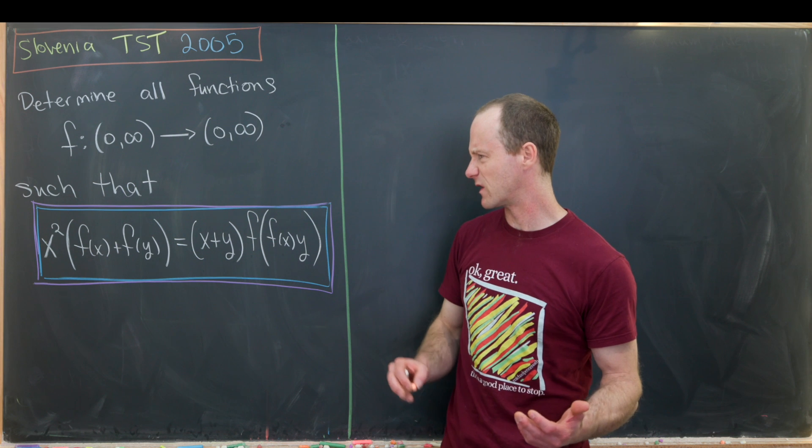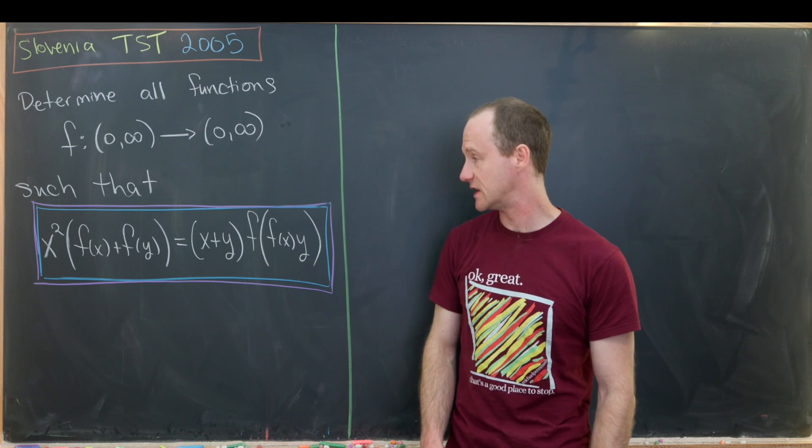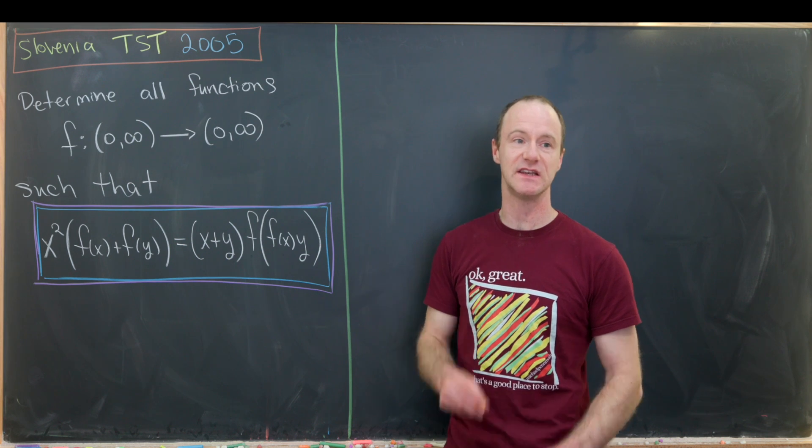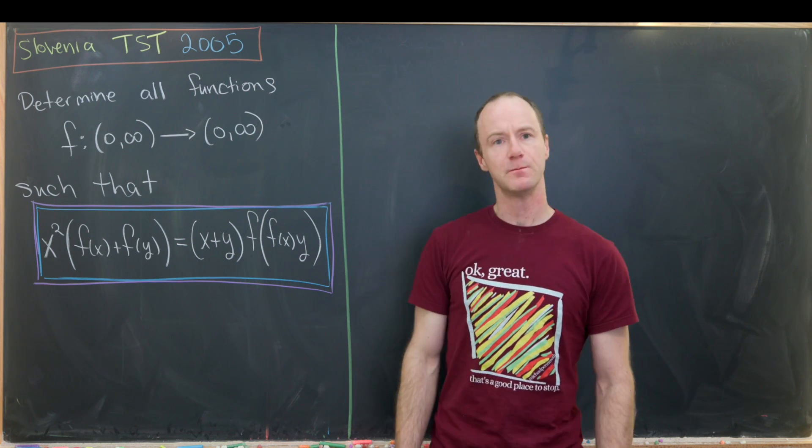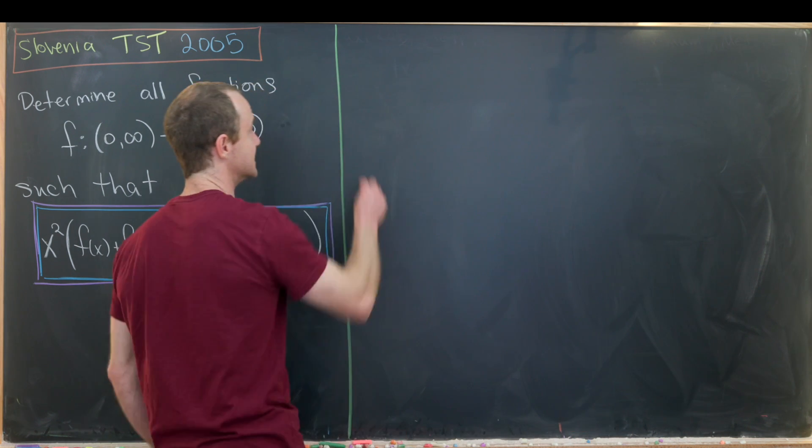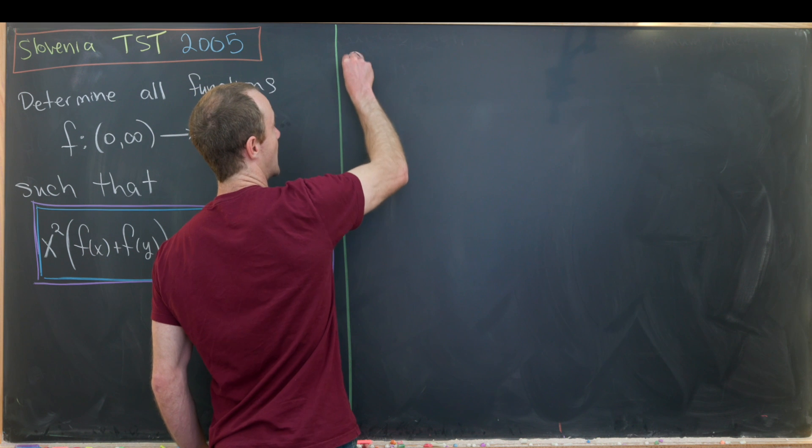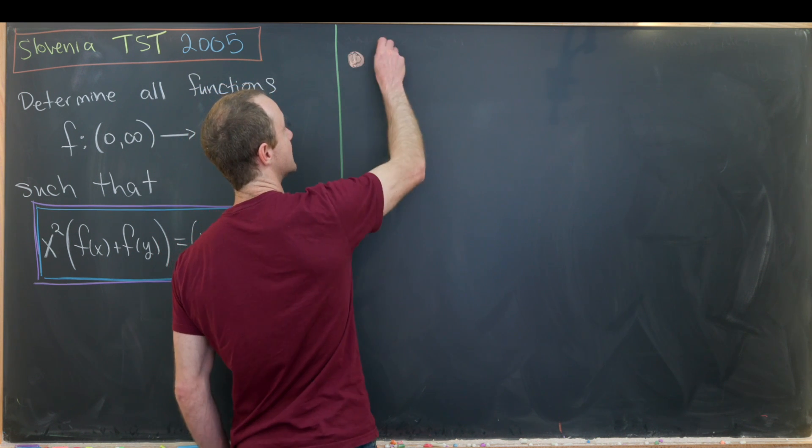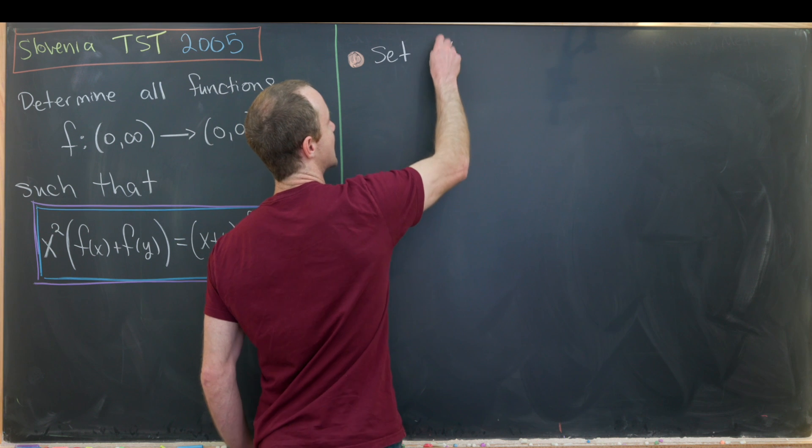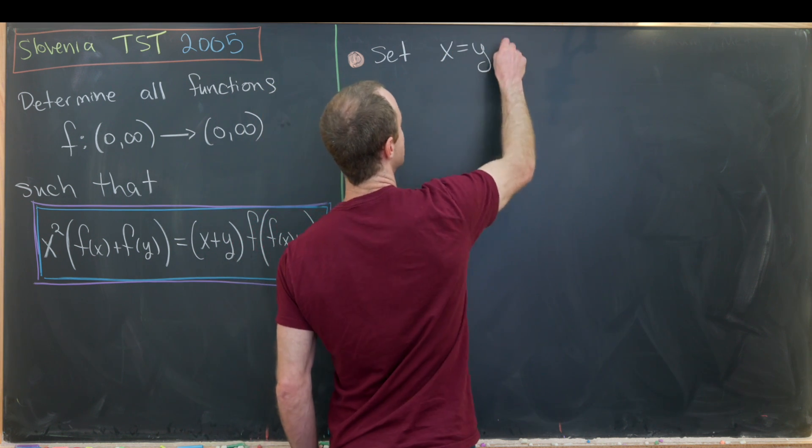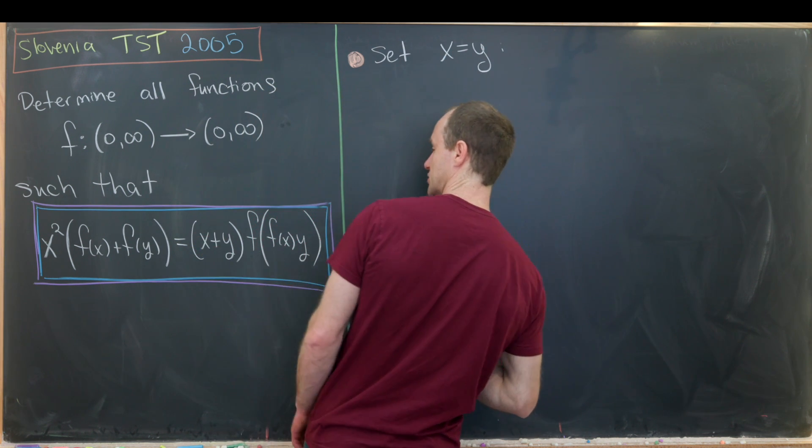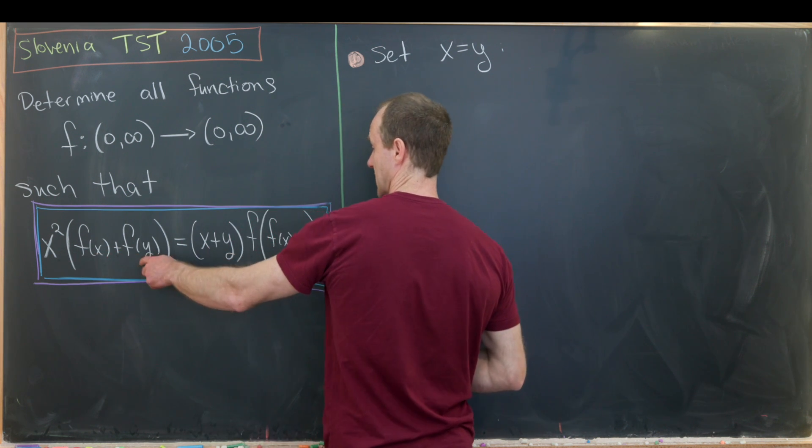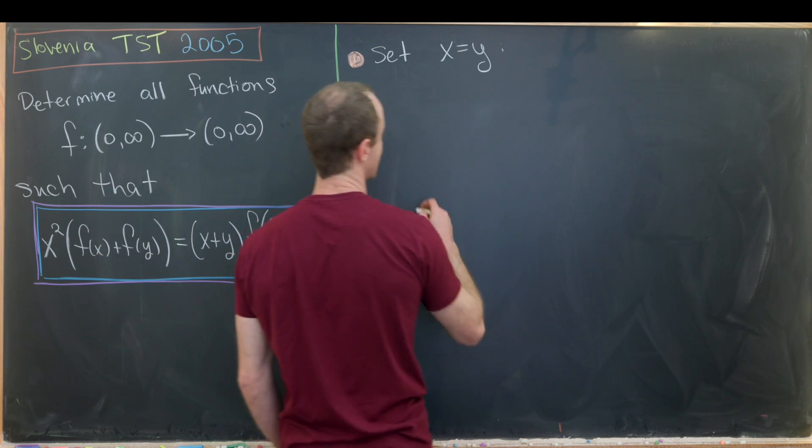Generally one of the first things that you want to start doing here is substituting different values for x and y to see if we can get some simplification. But the first thing I'll do is set x equal to y. So let's set these two variables equal to each other and see what we get.